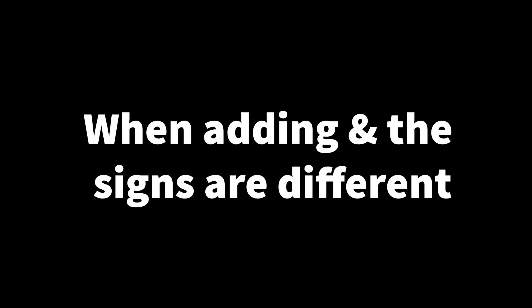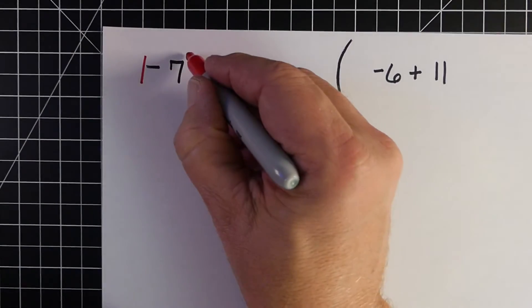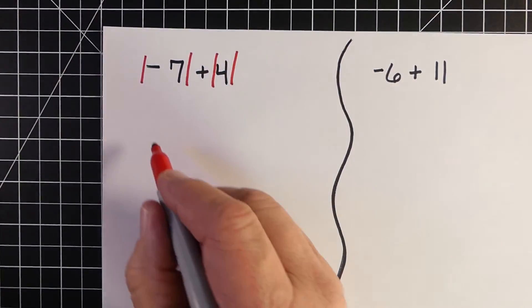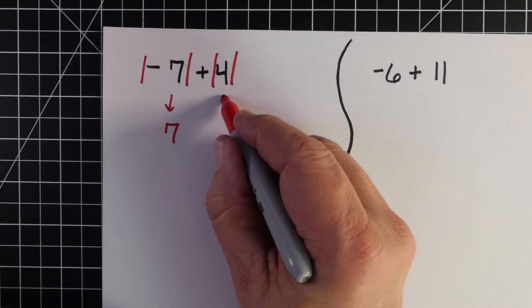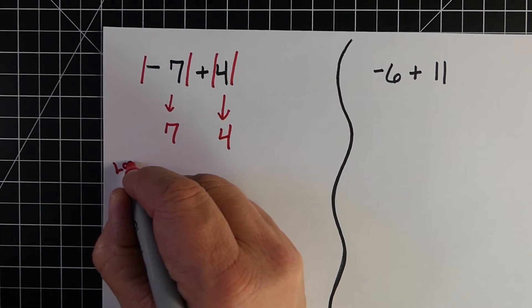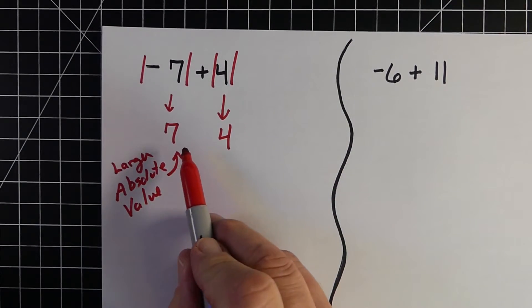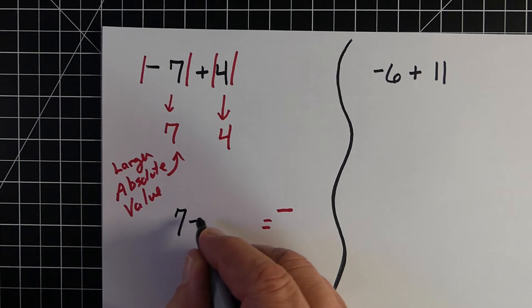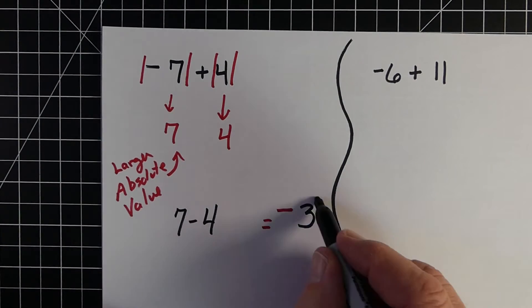The next example is where we're adding and the signs are different, so we're dealing with integers. Here's an example: negative 7 plus a positive 4. We find the absolute value of both — the absolute value of negative 7 is 7, and the absolute value of 4 is 4. We take the sign of the larger absolute value: 7 is larger, and its sign was negative. Then because the signs are different, we find the difference between their absolute values, and our answer is negative 3.